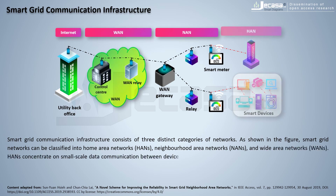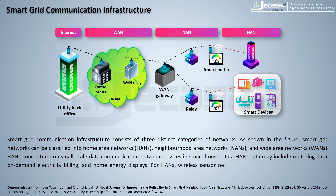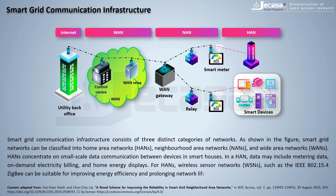HANs concentrate on small-scale data communication between devices and smart houses. In a HAN, data may include metering data, on-demand electricity billing, and home energy displays. For HANs, wireless sensor networks (WSNs) such as the IEEE 802.15.4 ZigBee standard can be suitable.